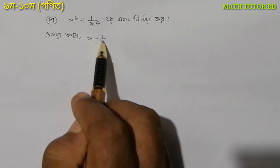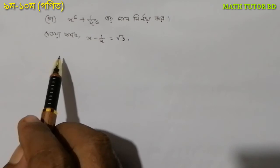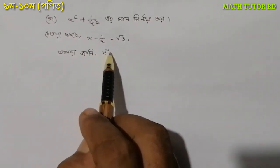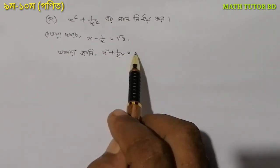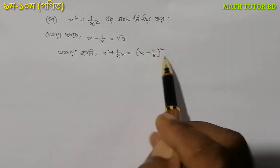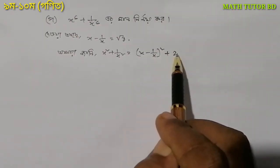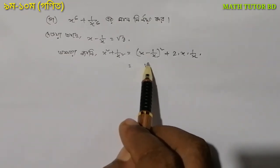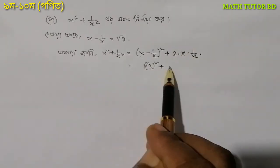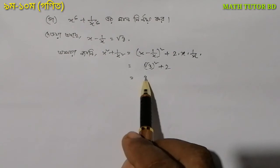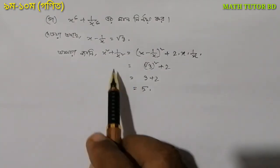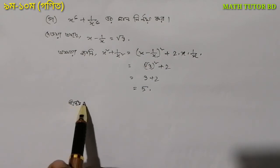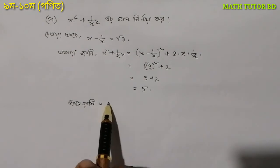x is equal to root 3. x² plus 1 by x² is equal to x minus 1 by x whole square plus 2ab, which is 2 into x into 1 by x. So x minus 1 by x whole square plus 2.